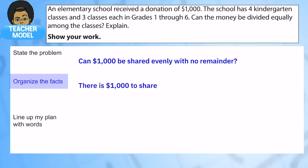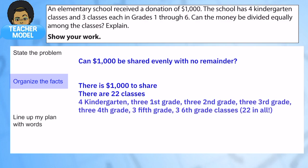And I know that there are 22 classes. You might be thinking, Sarah, how? I have four kindergartens and three classes in first through sixth grade. But there is a meaty part in there. There's four kindergarten classes, but there's three first grades, three second, three third, and on and on and on. So if you add all those numbers up, you actually get 22 classes all together.